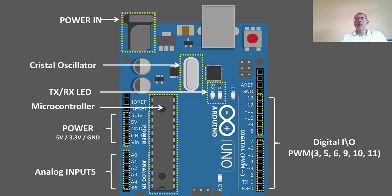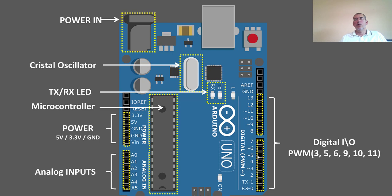You also have digital pins, which go from pin 0 all the way to 13. These are all digital inputs and outputs — they can be used for inputs or outputs. Note that some of the pins are labeled with a tilde symbol. Those pins are used for what we call PWM, or Pulse Width Modulation. That's a class by itself, so don't worry about it for now.